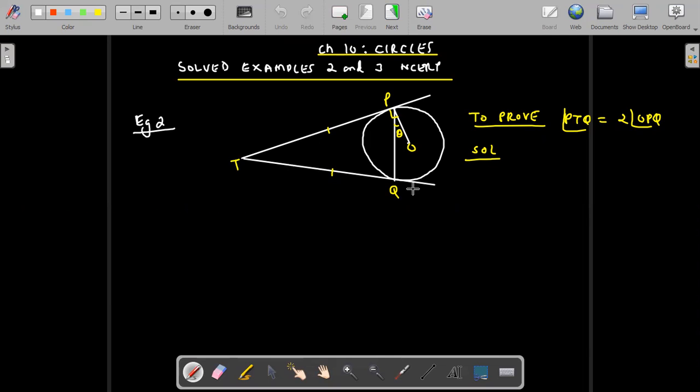The question says that TP and TQ are tangents over the center of the circle and we need to prove that angle PTQ, this particular angle here PTQ, is twice of angle OPQ. We have to prove that this is twice of OPQ, right? PTQ is twice of OPQ.